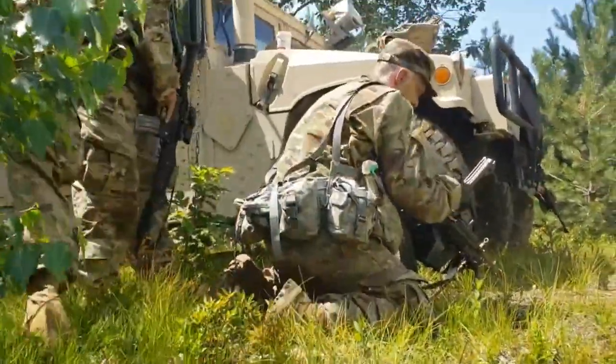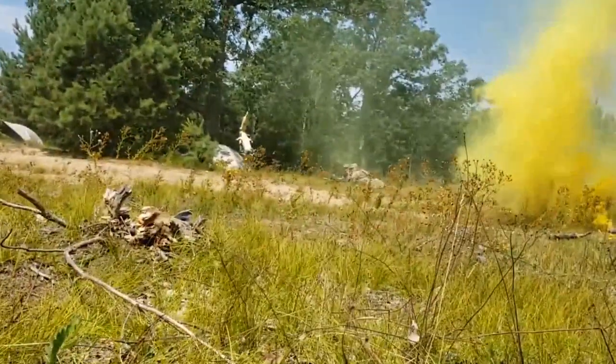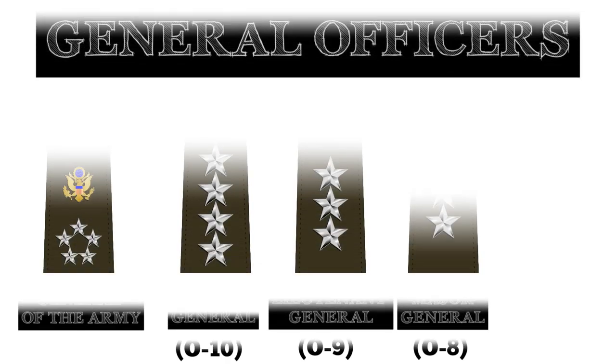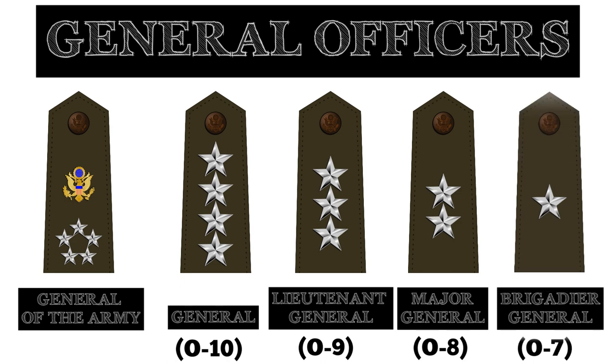Major generals usually command division-sized units of 10,000 to 16,000 soldiers and also have responsibility for major tactical operations as well as conducting sustained battles and engagements. The lowest rank for general officers in the U.S. Army is the rank of brigadier general. A brigadier general is a one-star general officer rank, and the holder of this rank generally serves as the advisor and deputy commander to a major general, assisting with overseeing the staff's planning and mission coordination.